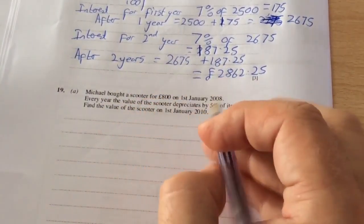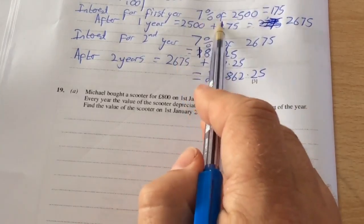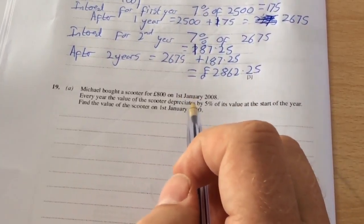When it depreciates, it goes down. So this time, instead of adding on the amount at the end of each year, you would take it away.